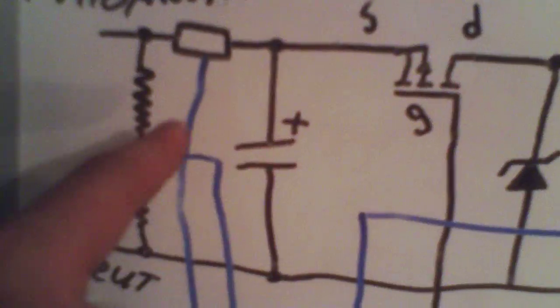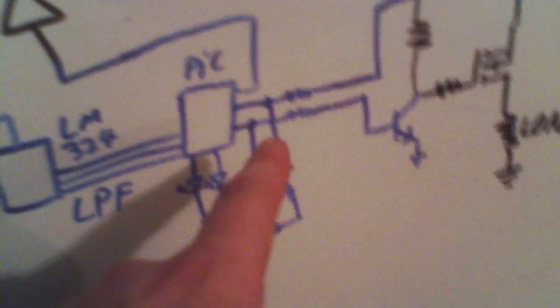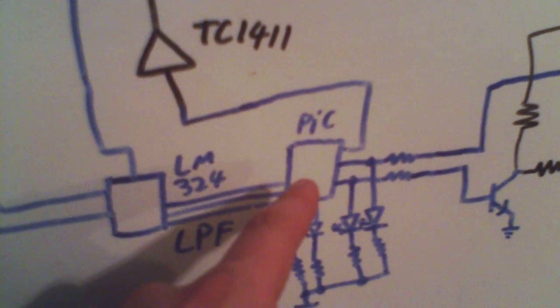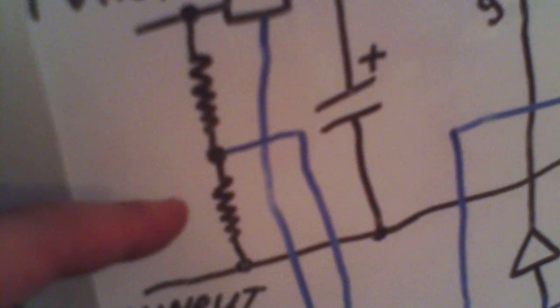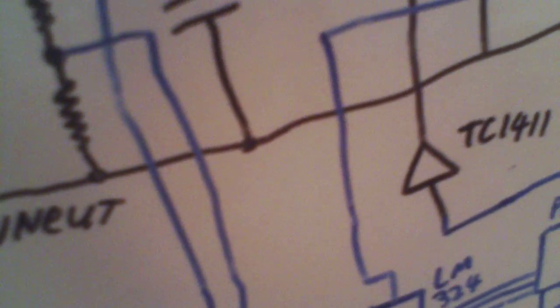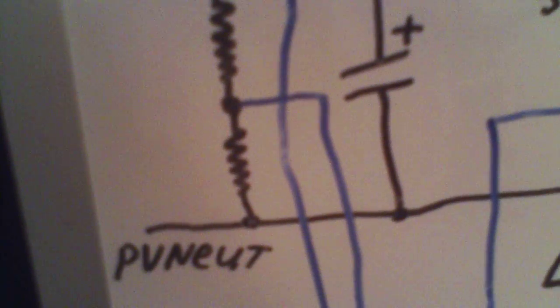Then there's a couple of potential dividers because the PIC microcontroller has ADCs that can only handle 0 volts to 5 volts. So those will just step it down to somewhere in that 0 volt to 5 volt range. Because the input of this is going to be up to 50 volts or 60 volts depending on the design.